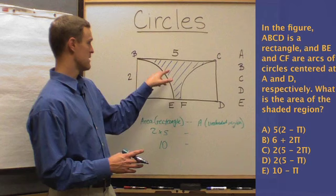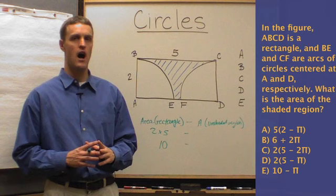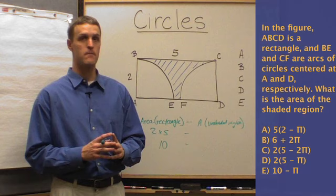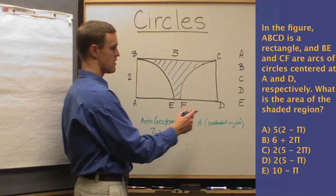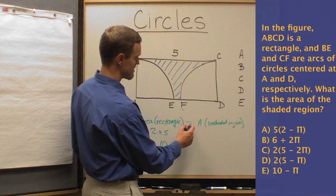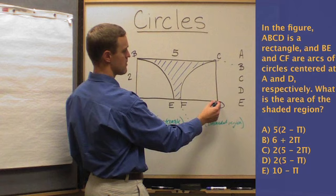Now the question, though, is what is the area of those unshaded regions? And the key lies in the question saying arcs CF and BE are arcs of a circle centered at D and A. In other words, if we were to kind of complete the circle, I'm not going to draw it because it'll kind of mess up what we're doing, but the whole circle is centered there at D. And so when we are seeing that arc, really what we're seeing is one quarter of a circle. Does that make sense?